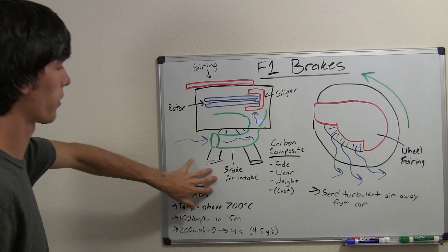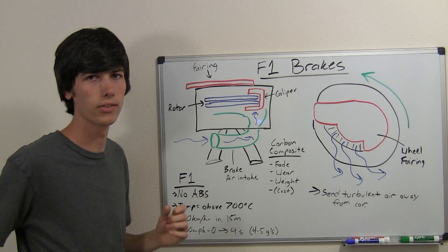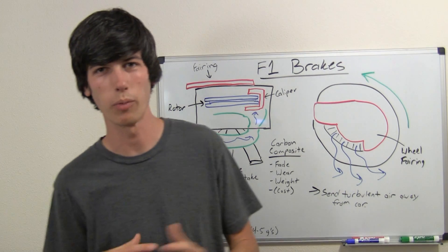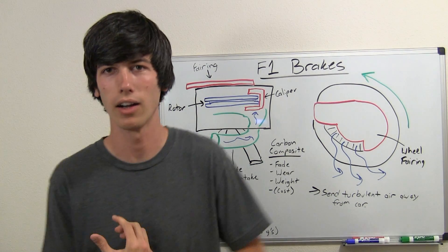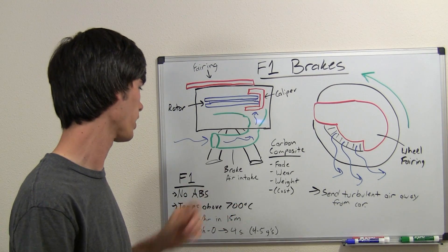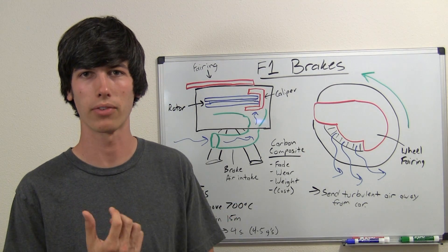So, some other things about Formula One brakes. Well, there is no ABS. ABS of course gives you the best possible stopping power. You can probably stop faster than any human is capable of using ABS if it has the right number of cycles.